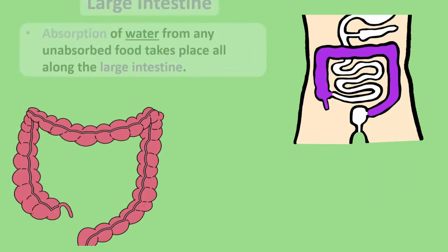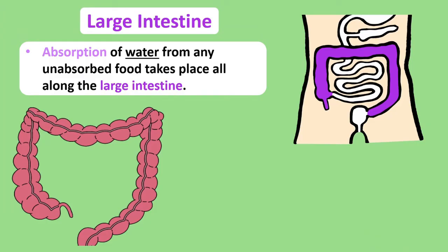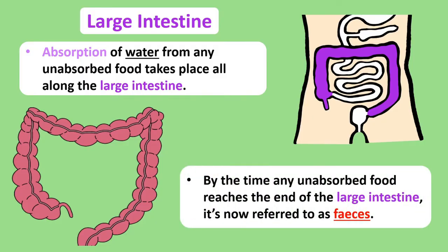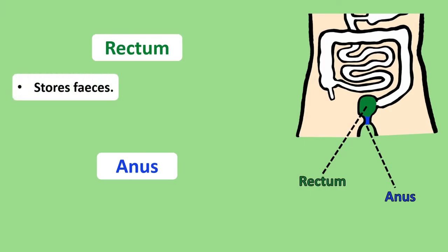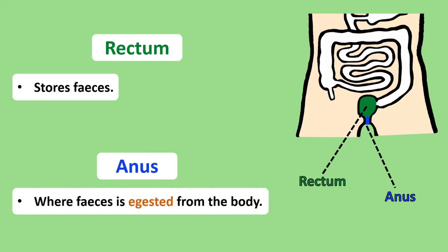Any food that isn't absorbed by the end of the small intestine reaches the large intestine, where water is taken out of your food and absorbed into the blood. Anything that hasn't been absorbed into the blood by the end of the large intestine is now called feces. Feces is sent to the rectum to be stored until egestion can take place through the anus, the final part of the digestive system, where any undigested and unabsorbed food is removed from the body.